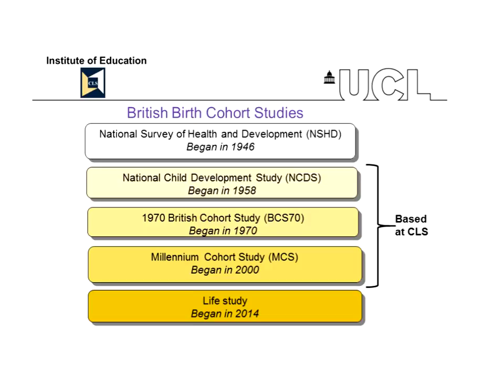Britain is really unique in its tradition of birth cohort studies. Many countries now have similar studies, but no other country has studies that go as far back as Britain does. BCS70 is one of five British birth cohort studies, and CLS is responsible for three of them. The earliest cohort was the National Survey of Health and Development, a smaller study also run at UCL, which began in 1946. Then there were the 1958 and 1970 cohorts, with 12-year intervals between those first three studies. Then there was a considerable gap before the Millennium Cohort Study began in 2000, and more recently the LIFE Study has begun, also based at UCL but not at CLS.